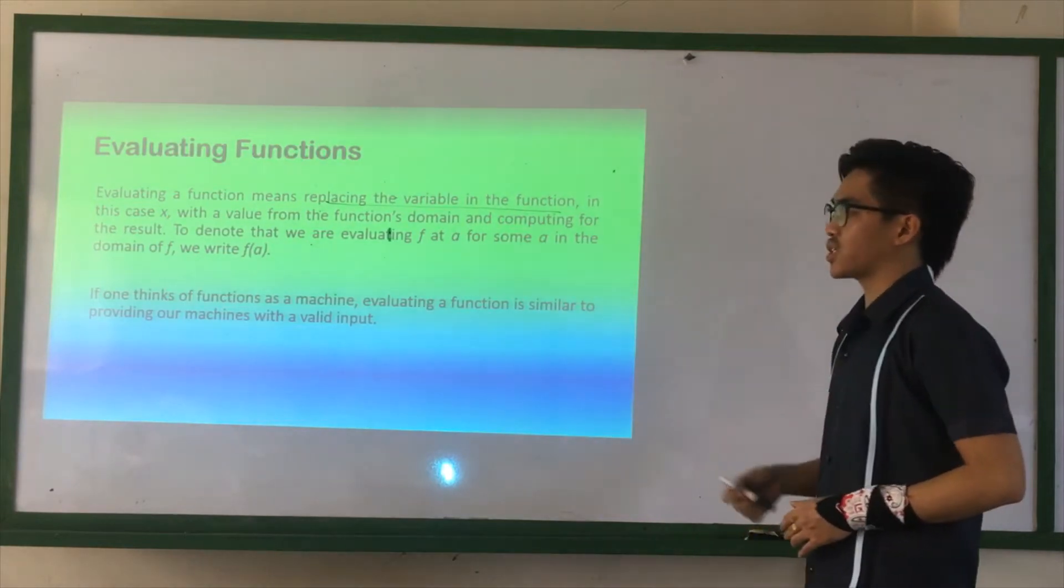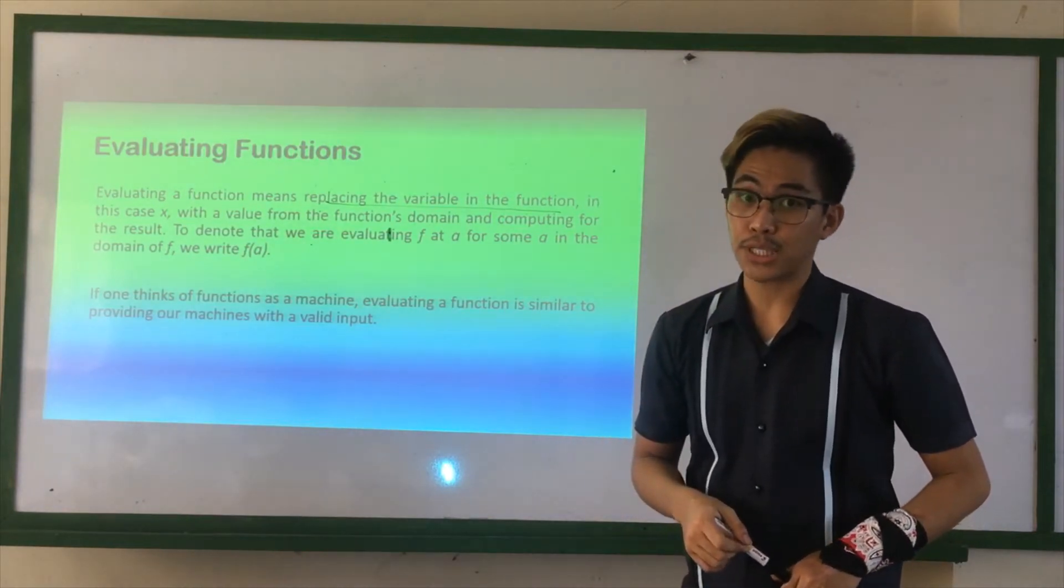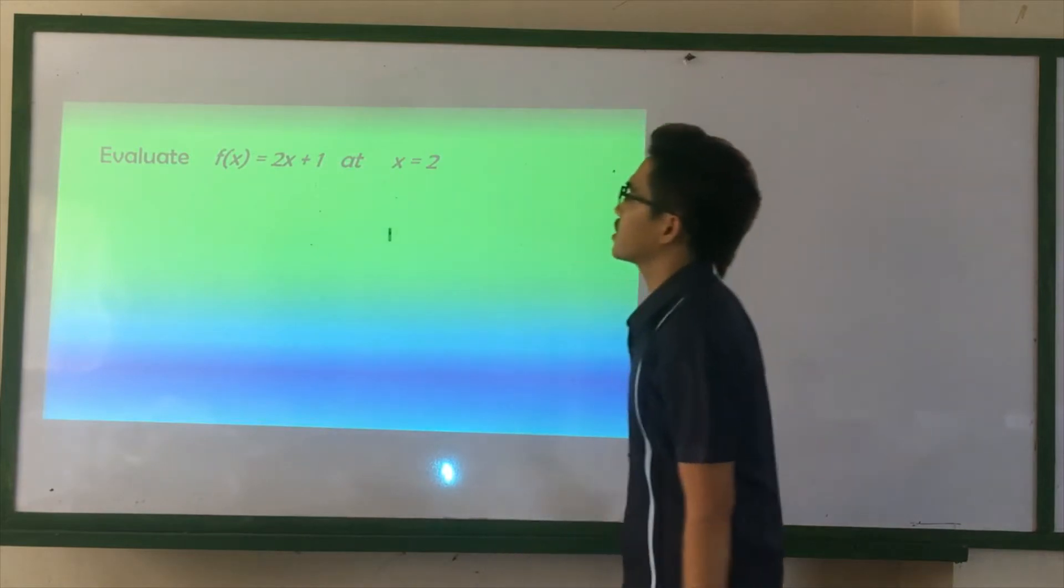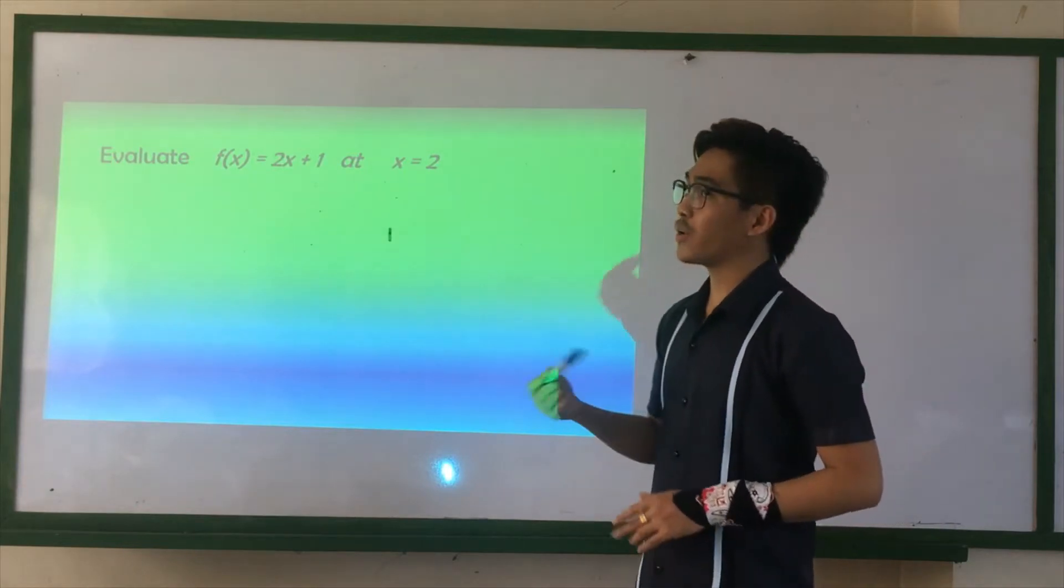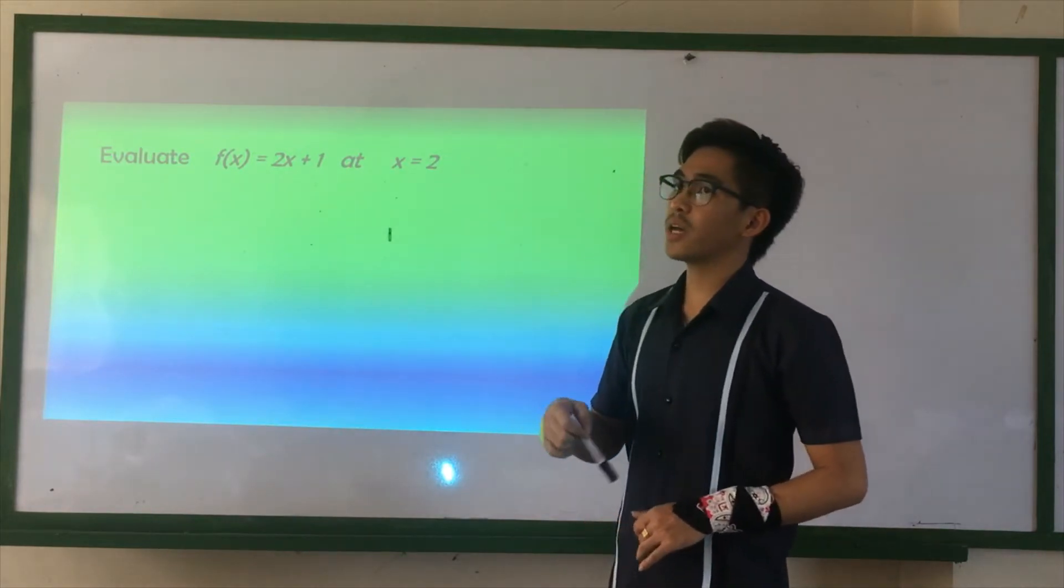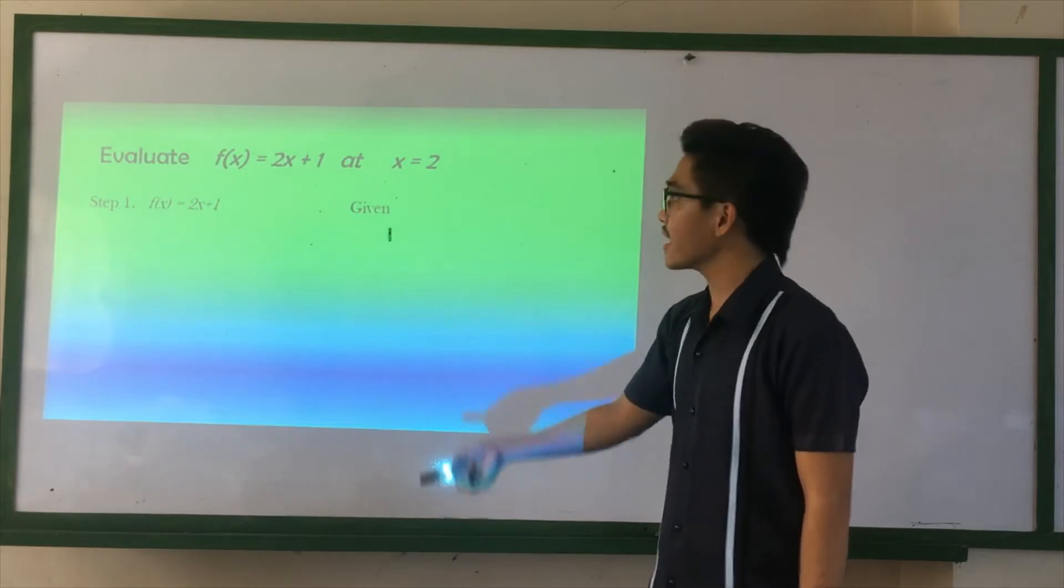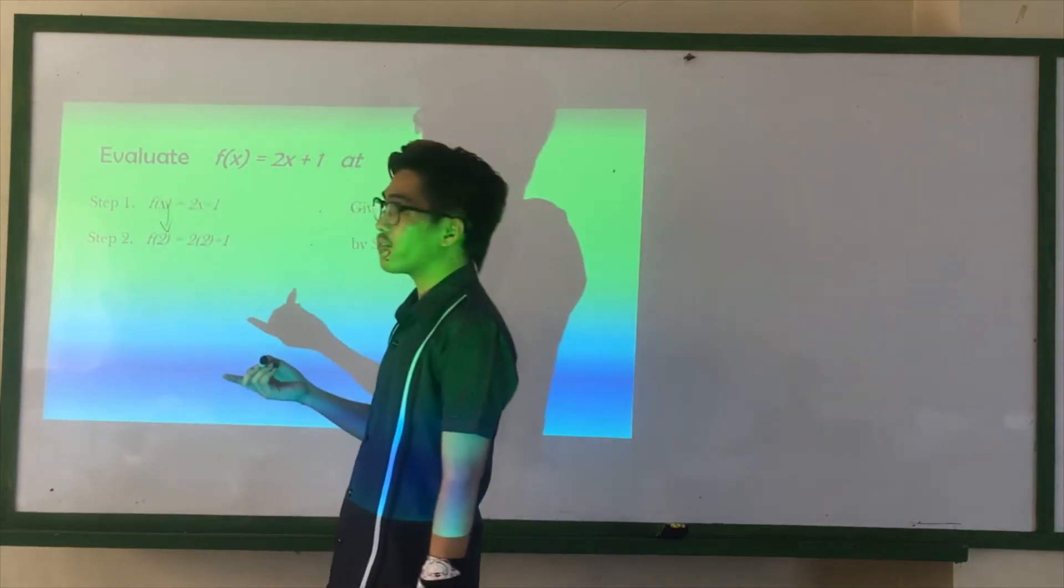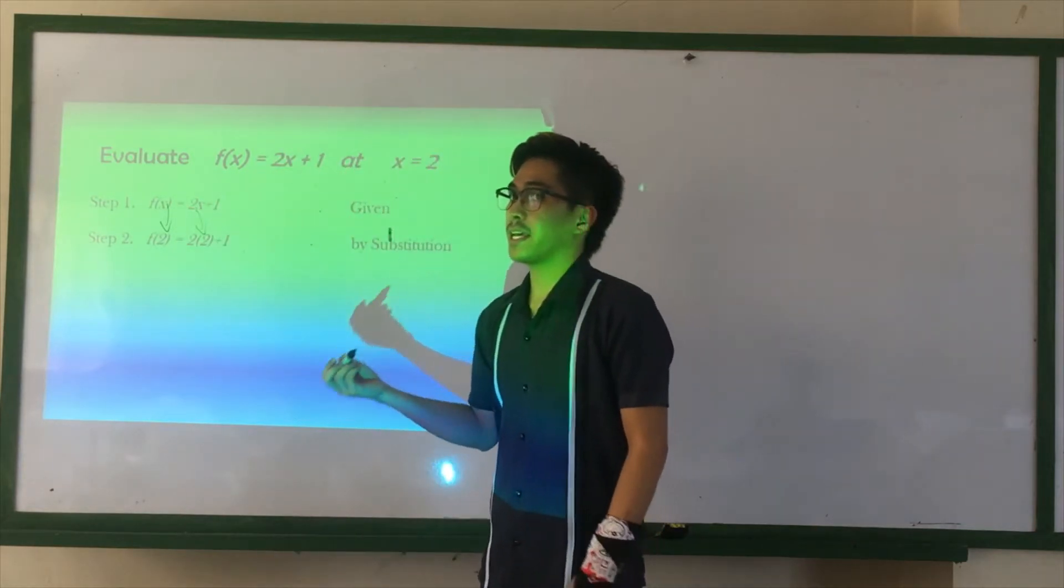If one thinks of functions as a machine, evaluating a function is similar to providing our machines with a valued input. For example, evaluate function f(x) equals 2X plus 1 at the specific value of X equals 2. So, remember, we replace the value of the variable to the given value, which is 2. First, we replace the value of X to 2. So, F of 2 equals 2 times 2 plus 1. That is a substitution.